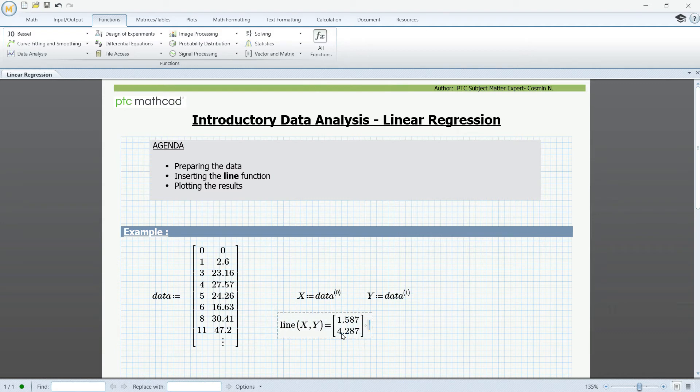Evaluating the function will return a vector of two values. And these two values represent coefficients of a line function with the form a plus bx that best approximates the data in our two vectors. So the next step is to assign the results of the function to a vector of variables.